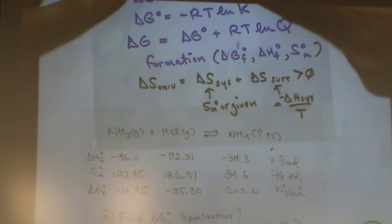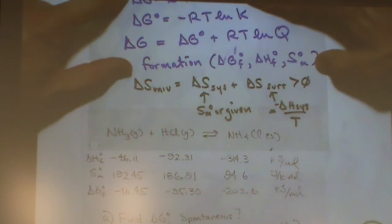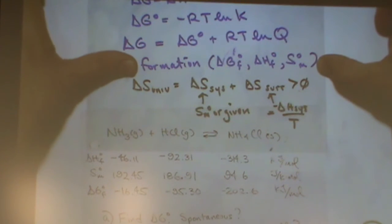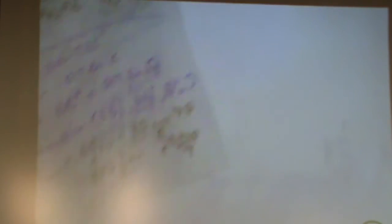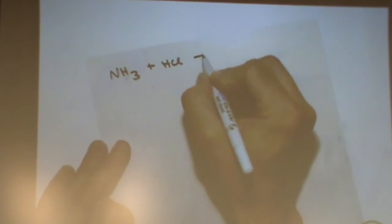So you could either use this top one in conjunction with the formation, or just the formation for the delta G. So let's do it the easy way. For the easier route here, I need to be able to see this number. Let me rewrite the reaction. It's NH3 plus HCl. Those are both gases. It goes to a solid NH4Cl.